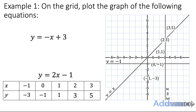We can plot those coordinates on the graph: minus 1, minus 3; 0, minus 1; 1, 1; 2, 3. So minus 1 across, minus 3 down goes here; 0 across, minus 1 down; then 1, 1 and 2, 3. And we can connect them up with that straight line.